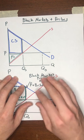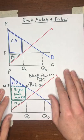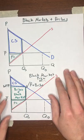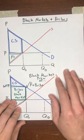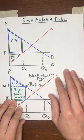So next we're going to move on to the next effect of price ceilings, which is search costs and waiting in line.